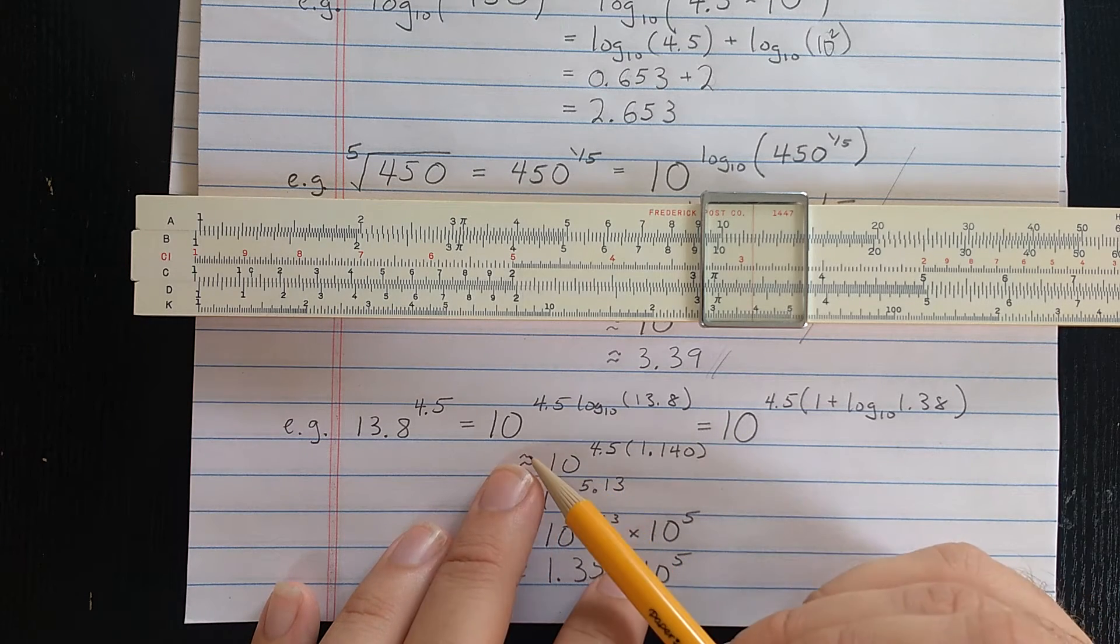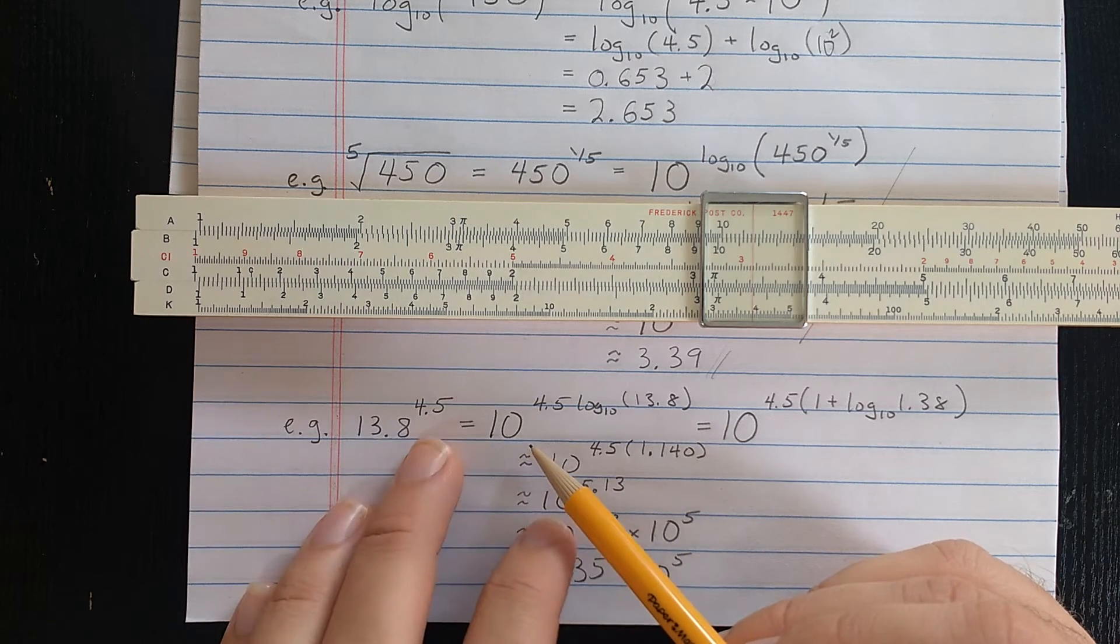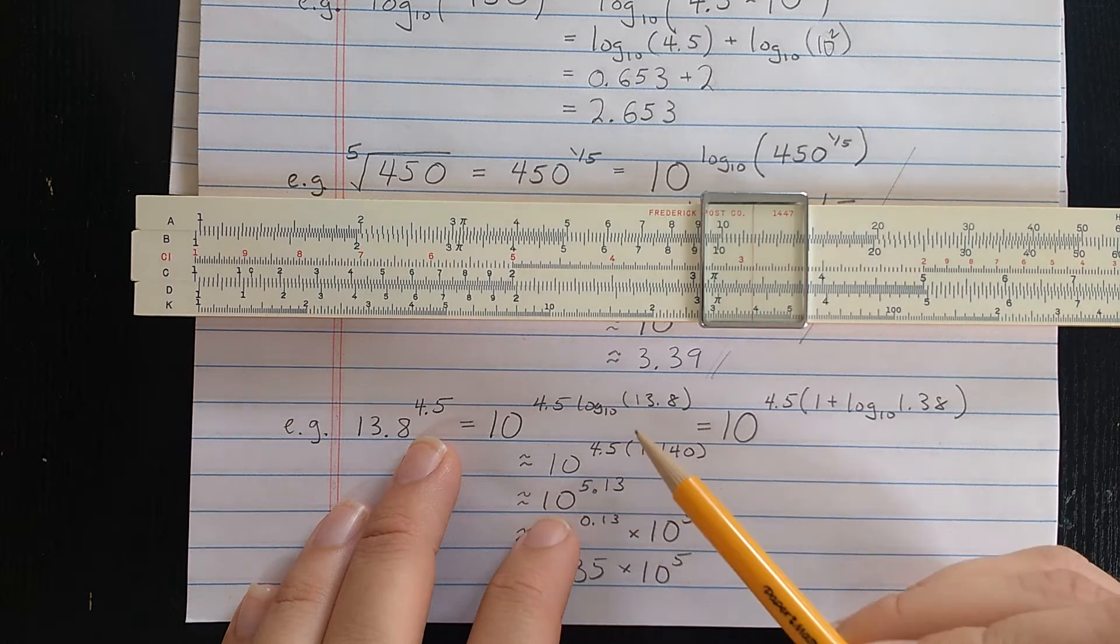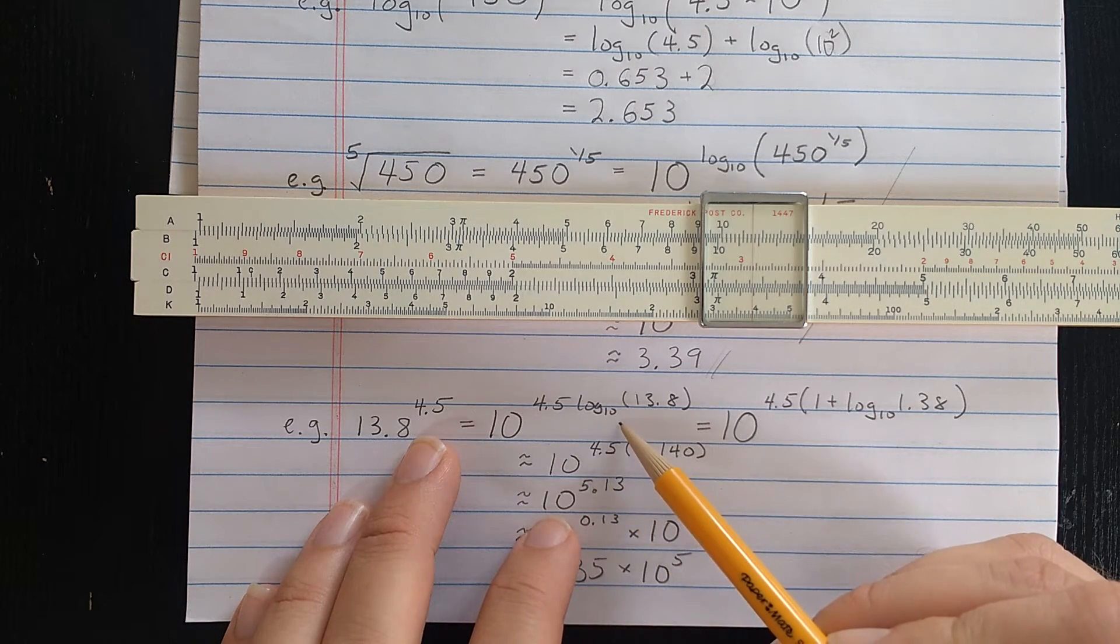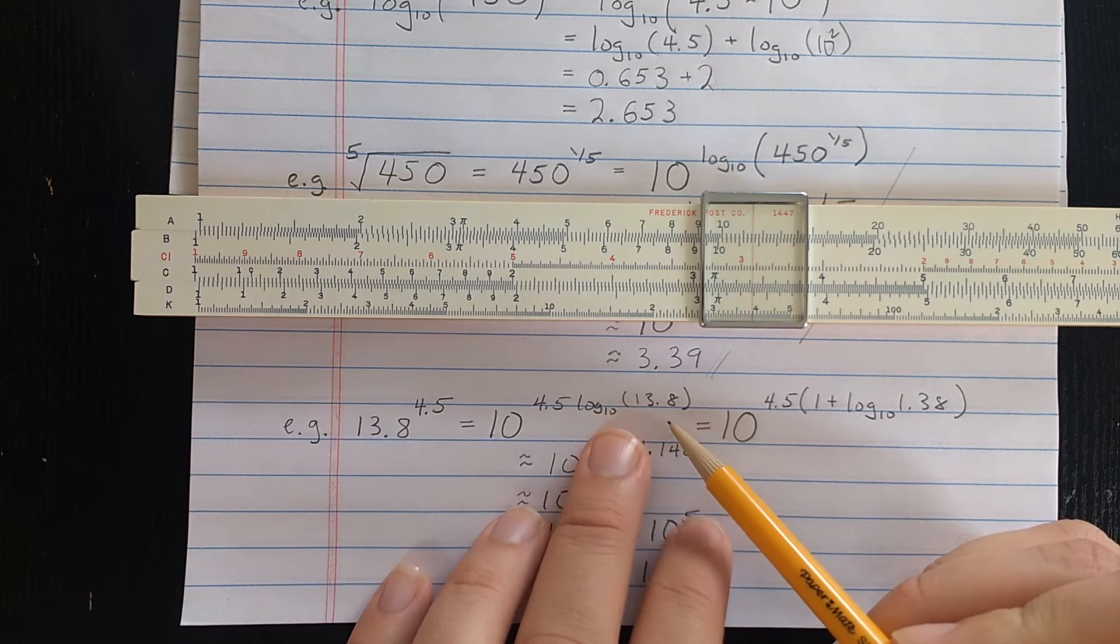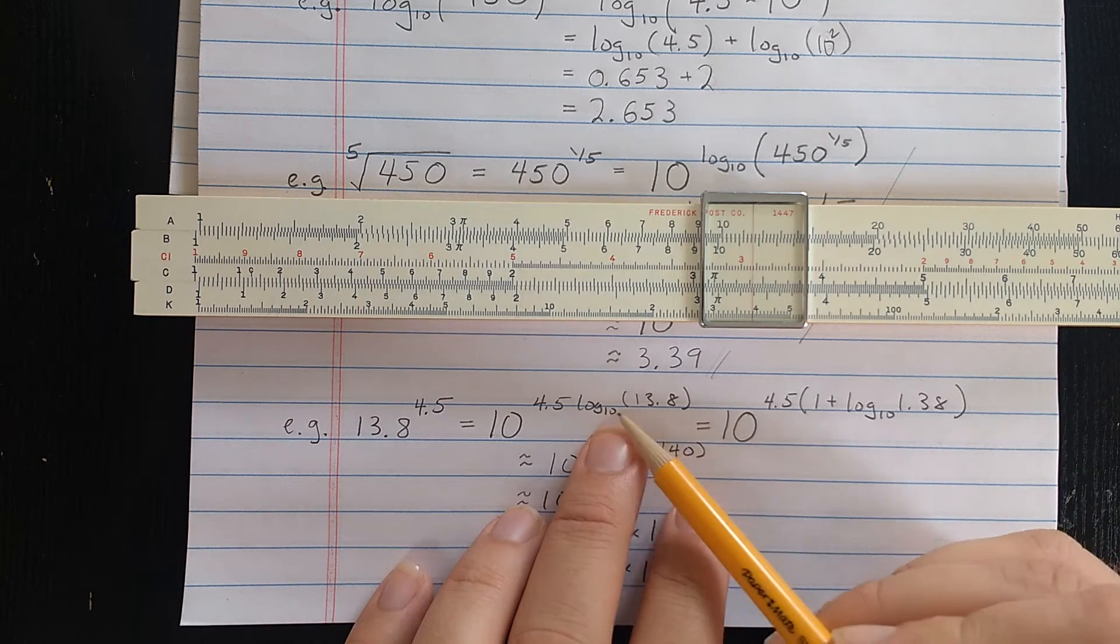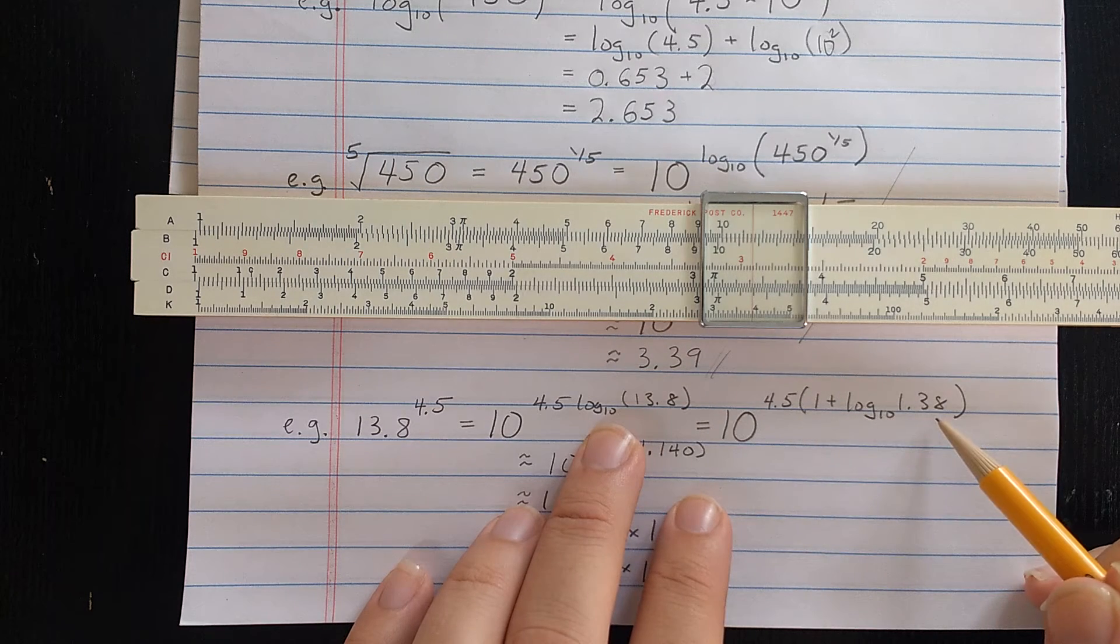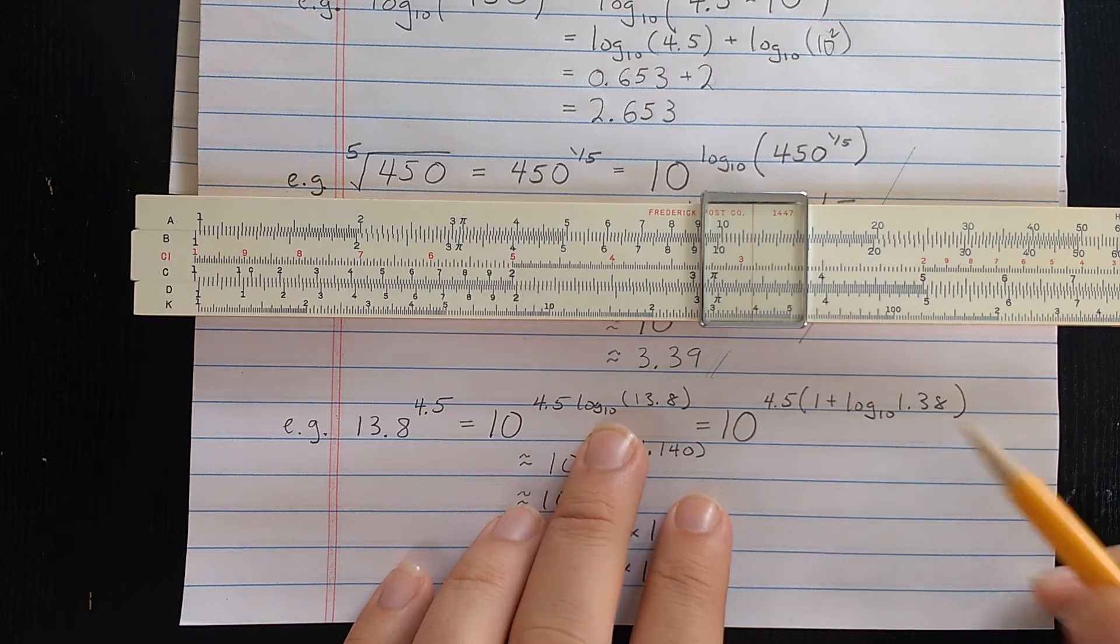So I'll do that as 10 to the logarithm of this. Of course, I've already simplified here. So that's 10 to the 4.5 times the log with base 10 of 13.8. Of course, applying the log rules again, that log base 10 of 13.8 is 1 plus log with base 10 of 1.38.